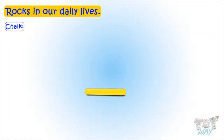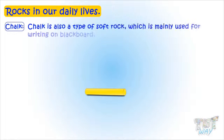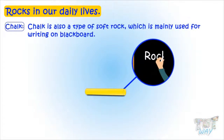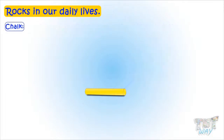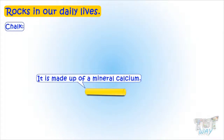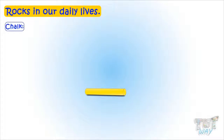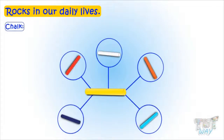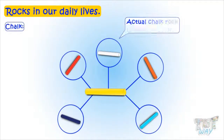Chalk is also a type of soft rock which is mainly used for writing on blackboards. It is made of a mineral named calcium. Chalk can be given any color, and we get different colors of chalk in the market, but actual chalk rock is white in color.